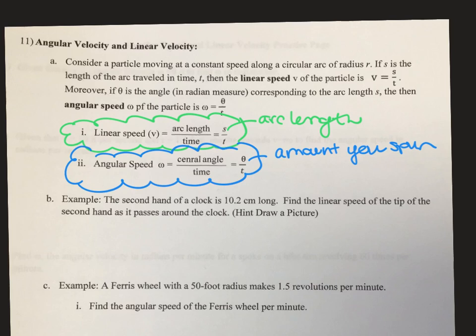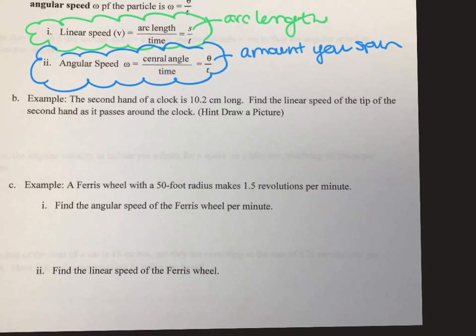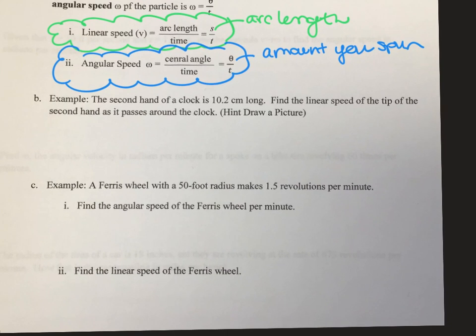So let's look at a couple examples. So this first example says, let a second hand on a clock be 10.2 centimeters long. Find the linear speed of the tip of the second hand as it passes around the clock. Hint, draw a picture. So I'm going to cheat a little bit, and I'm going to insert a clock, a circle. So there's my circle. And my clock has a second hand. Now the length of that second hand is 10.2 centimeters long.